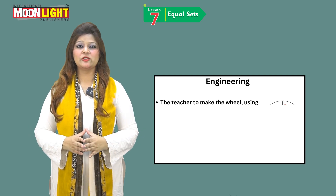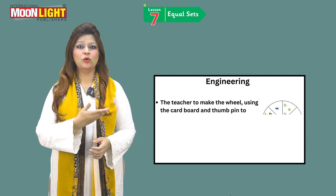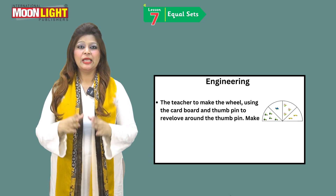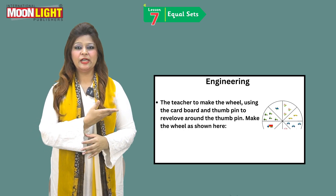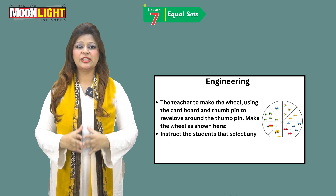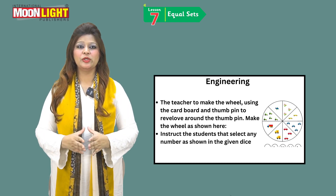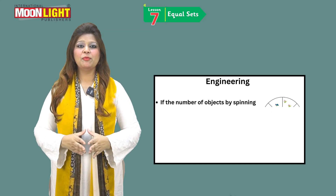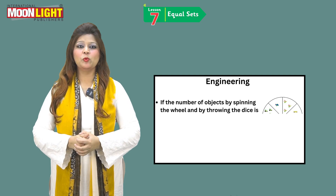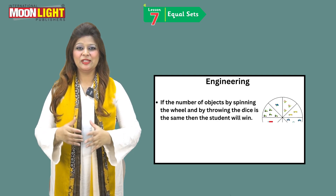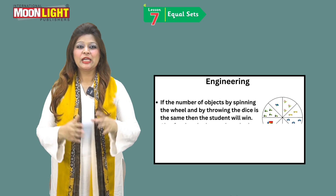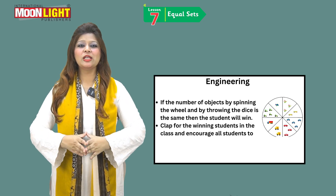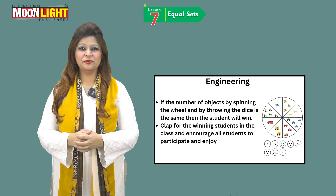For the engineering section, the teacher is to make a wheel using cardboard and thumbtacks to revolve around the thumbtacks. Make the wheel as shown. Instruct the student to select any number as shown in the given dice picture, then roll the dice. If the number of objects by spinning the wheel and by throwing the dice is the same, the students will win. Clap for the winning students and encourage all students to participate and enjoy the activity.